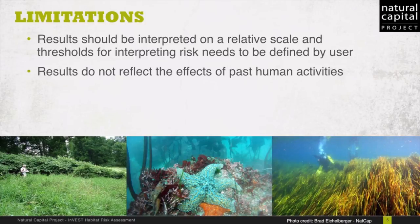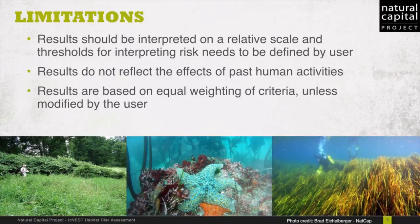If users have historical data on the exposure of habitats to human activities, for example spatial and temporal extent, and information on how this affects current consequence scores, this may be included in the analysis for more accurate results. Results are based on equal weighting of criteria unless the user weights the criteria by importance or data quality. The model calculates the exposure and consequence scores assuming that the effect of each criterion, for example spatial overlap and recruitment pattern, is of equal importance in determining risk. The relative importance of each of the criteria is poorly understood, so we assume equal importance. However, the user has the option to weight the importance of each criterion in determining overall risk.